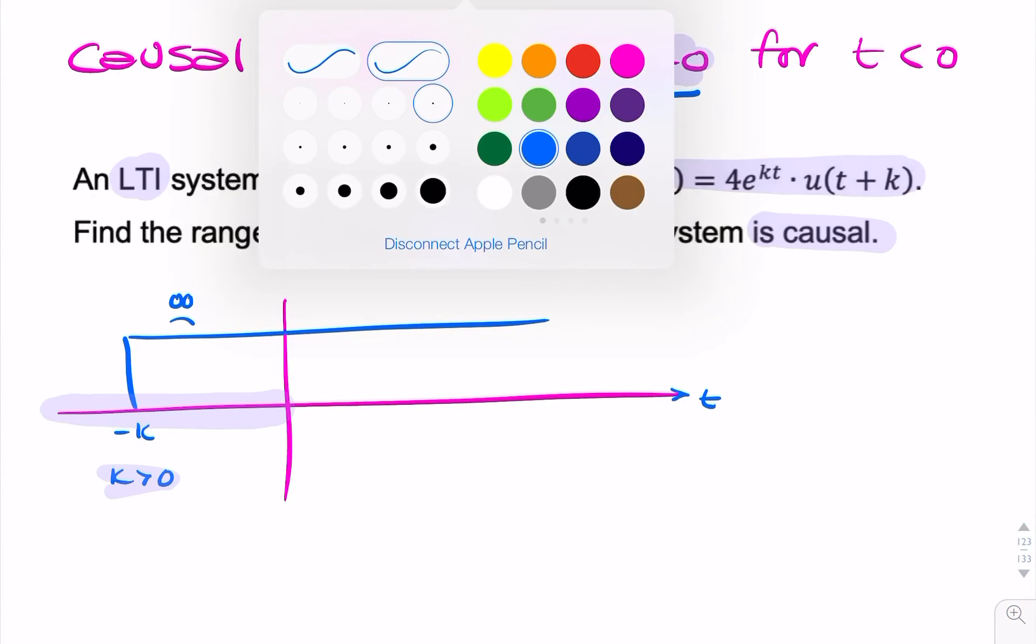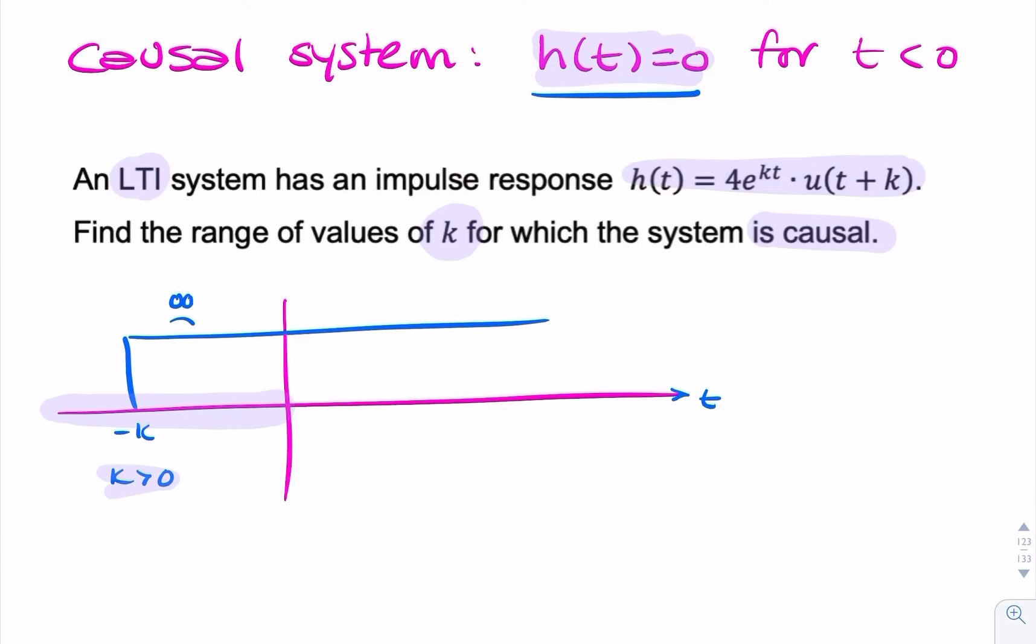Now, if k happened to be negative, if k was less than zero, you'd have u of t plus k, t equals minus k, which equals minus a minus number. That would give you positive, and your step would look like this.